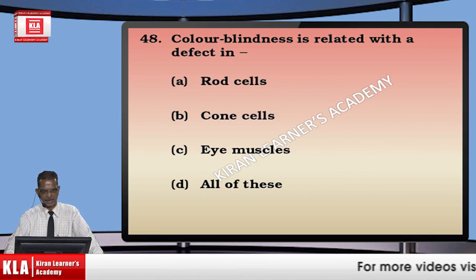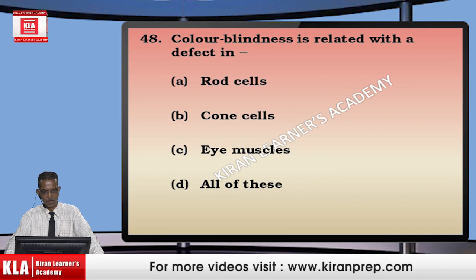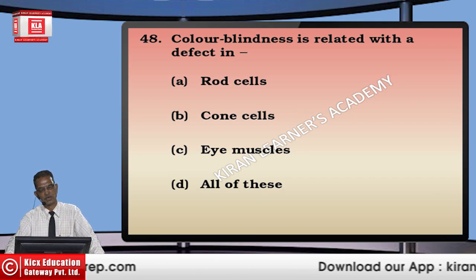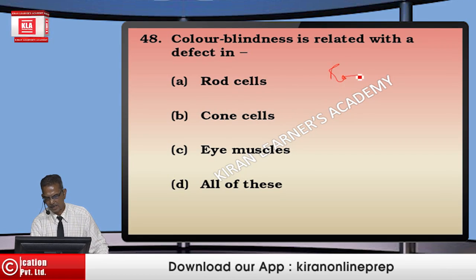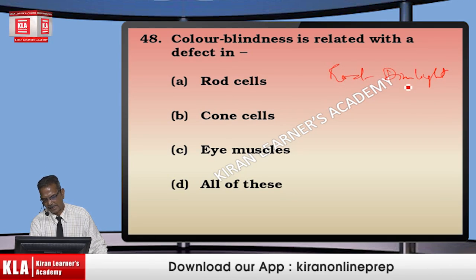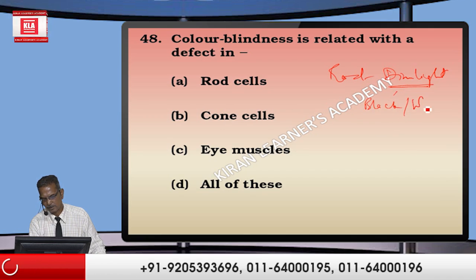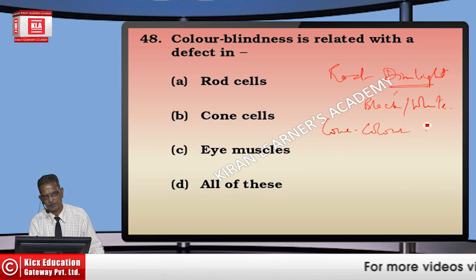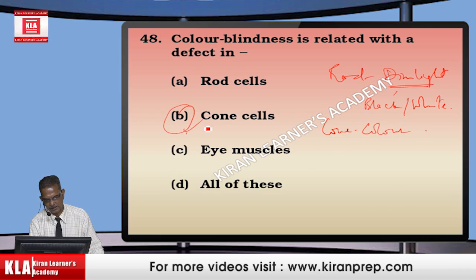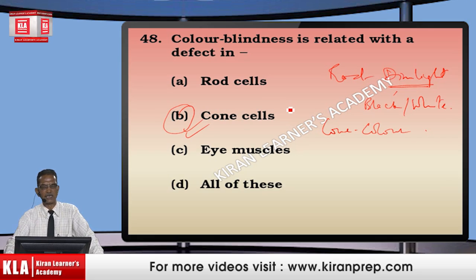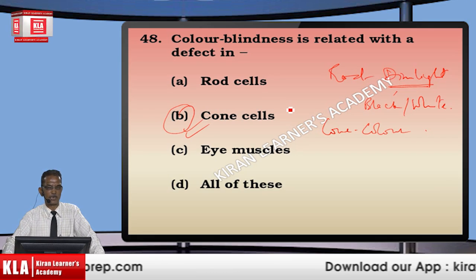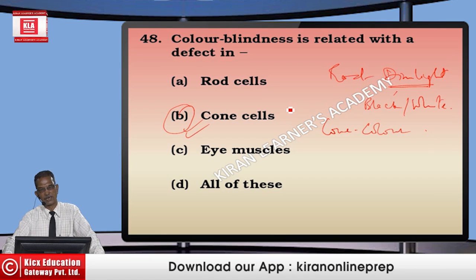Colorblindness is related to defective cone cells. In the retina, rod cells function in dim light and can only distinguish black and white. Cone cells give us the sensation of color. Therefore, colorblindness is related to cone cells, not rod cells. The ciliary muscles only help change the focal length of the eye lens to focus images on the retina. So option C — cone cells — is correct.